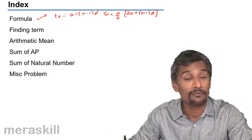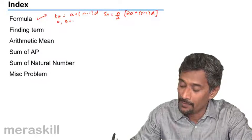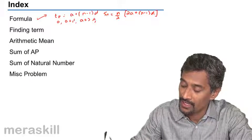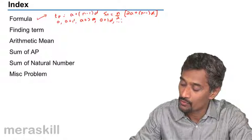Sn is equal to n by 2 into 2a plus n minus 1 into d. These are the two major formulae. For the progression itself, it is going to be a, a plus d, a plus 2d, a plus 3d, and so on and so forth.